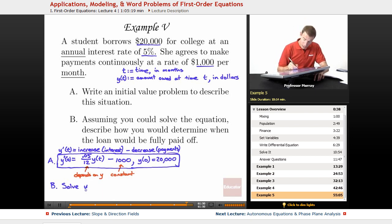And so that'll tell you what the time will be when she owes $0. Well, y of t is the amount she owes, so you would solve y of t is equal to 0.